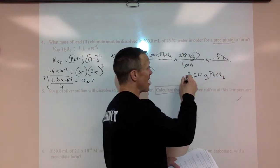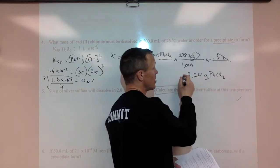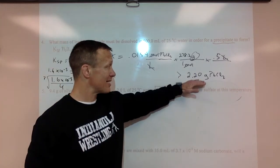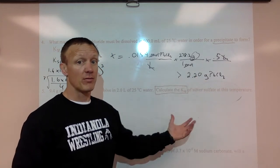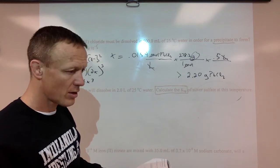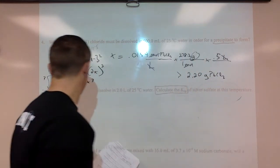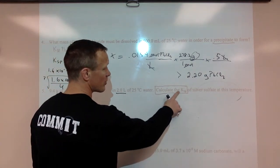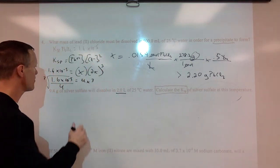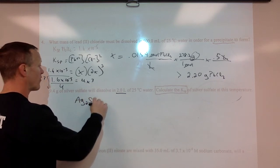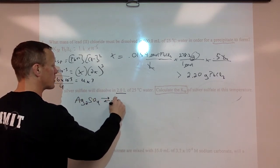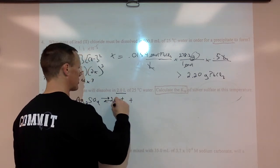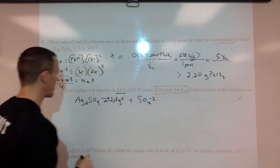So anything above that would cause a precipitate. Anything greater than 2.2 grams would cause a precipitate. You could put exactly this much in and it would dissolve. Anything above that would cause a precipitate. One more question here. Number five. 9.4 grams silver sulfate would dissolve in two liters of water. What's the KSP? So we want to know the KSP. Silver sulfate is Ag2SO4. So that splits apart into two moles of silver ions plus one mole of sulfate ions.